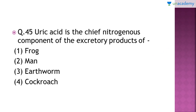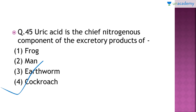Question number 45: uric acid is the chief nitrogenous excretory product of which of the following? The correct answer is option number four — cockroach. Cockroach is a uricotelic animal whose chief excretory product is uric acid. Other examples of uricotelic organisms include various reptiles, birds, land snails, and insects — they all excrete uric acid.